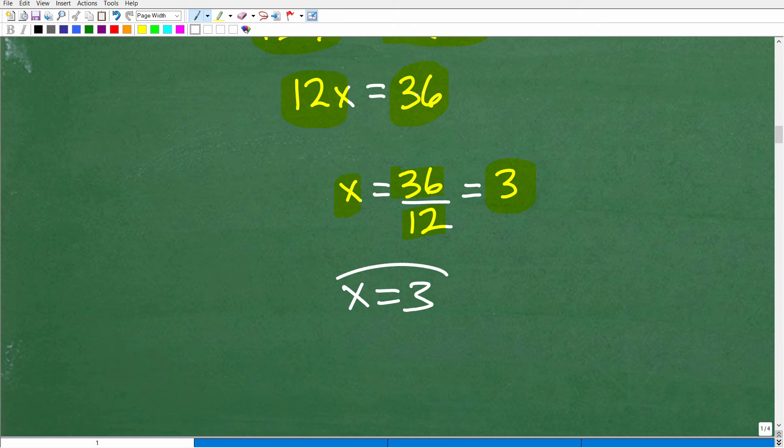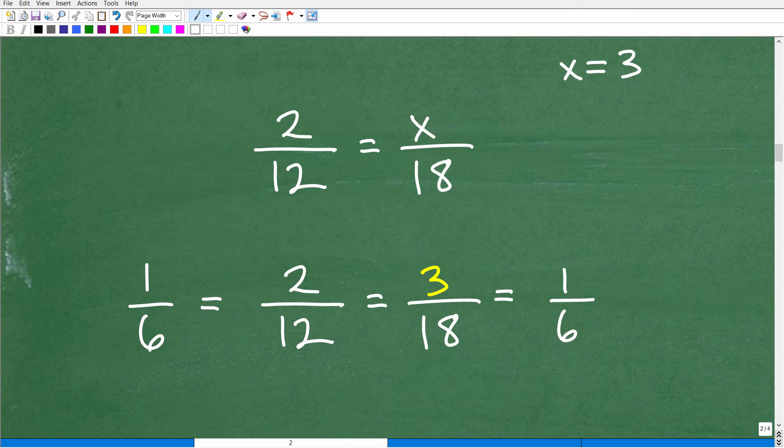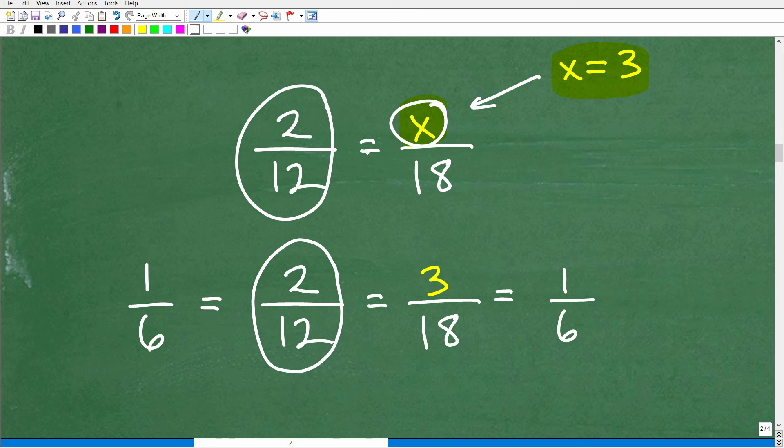So x is equal to 3. That is the solution. But let's double check this. So here was our original problem. 2 is to 12 as x is to 18. We just determined or solved x is equal to 3. Let's go ahead and check that work here. Let's go ahead and replace this x with 3. So I'll do that right here. So now I have this fraction, 2 over 12 is equal to not x over 18, but 3 over 18.